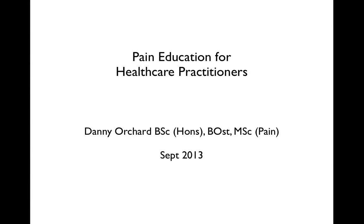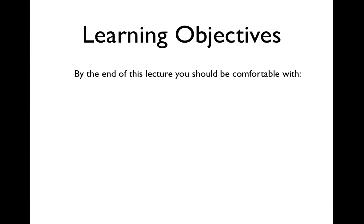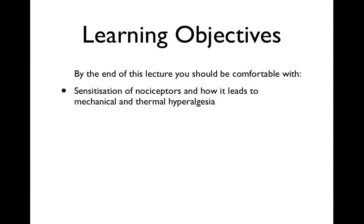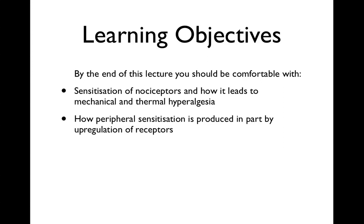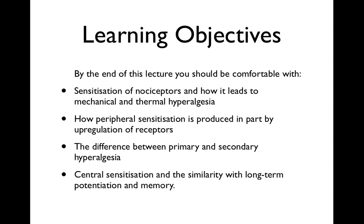Hello and welcome to today's lecture on the mechanisms behind peripheral and central sensitization. By the end of this lecture you should be comfortable with sensitization of nociceptors and how it leads to mechanical and thermal hyperalgesia, how peripheral sensitization is produced in part by upregulation of receptors, the difference between primary and secondary hyperalgesia, and central sensitization and its similarity with long-term potentiation and memory.